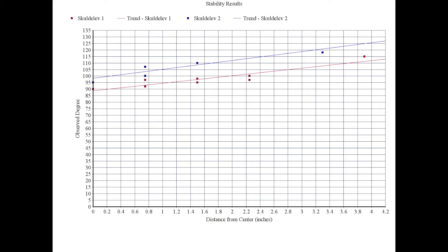This graph shows the observed degree of tilt on the y-axis relative to the positioning of the weight on the x-axis. Skuldelev 1 is in red and Skuldelev 2 is in blue. Our Skuldelev 2 model had higher observed degrees of tilt relative to the weight's distance to center than our Skuldelev 1 model did.